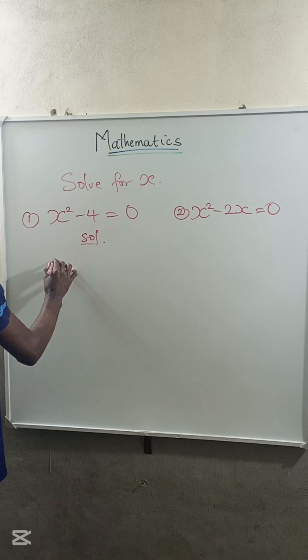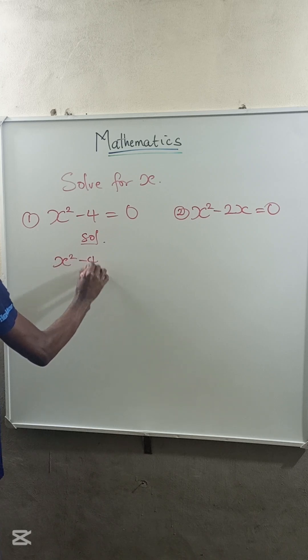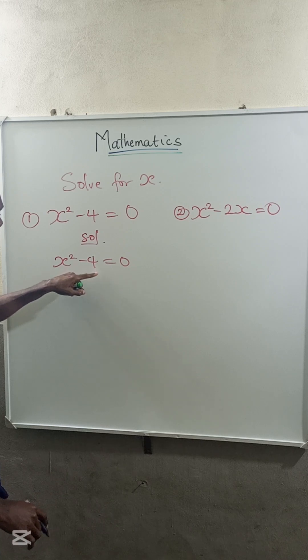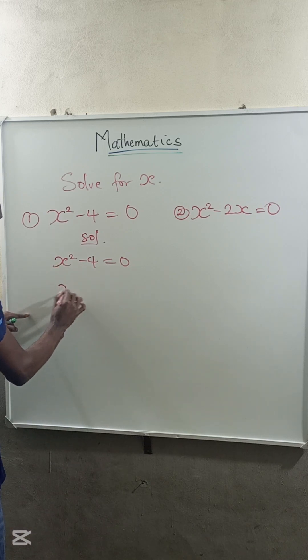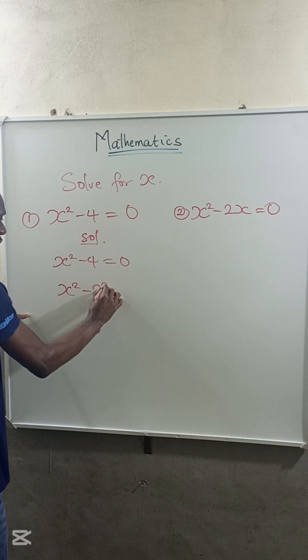So for the first question, we have that x squared minus 4 is equal to 0. So the first thing we do here is to express 4 in powers of base 2. So this becomes x squared minus 2 to the power of 2 is equal to 0.